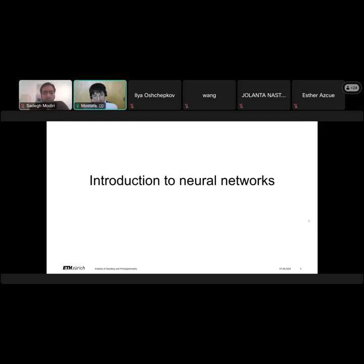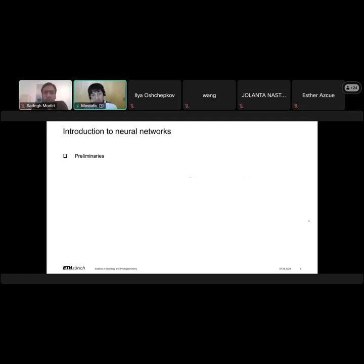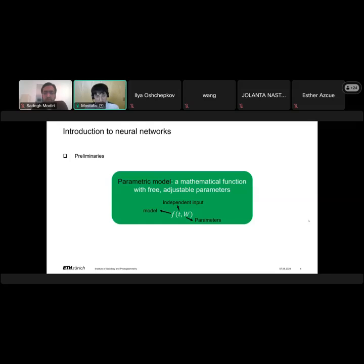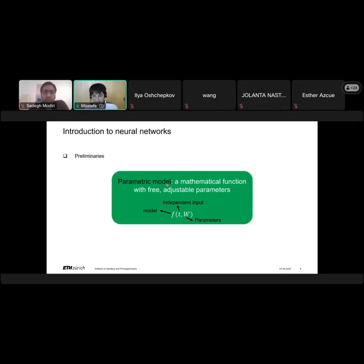So the first part is the introduction to neural networks. This is a very basic introduction and I hope it is useful. To define neural networks, we need to know the concept of a parametric model. A parametric model is a mathematical function that has adjustable parameters.